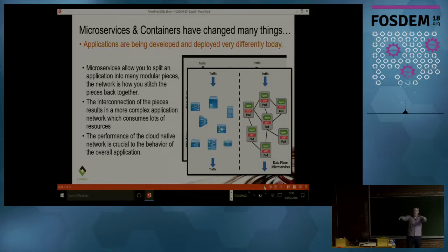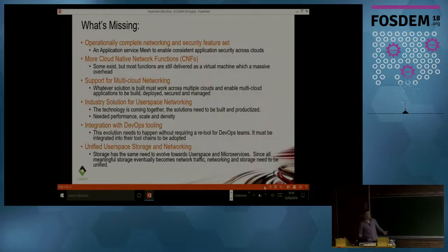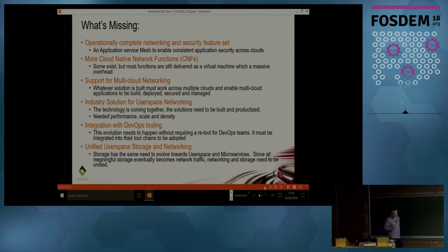Instead of building a network topology for a specific application, you're just building this giant leaf-spine architecture, sticking all your servers on the end of it, and your apps run over that using overlays. So the performance of the networking is going to be absolutely critical. Up to now, the container world has mostly been focused on more generic applications, not networking stuff.